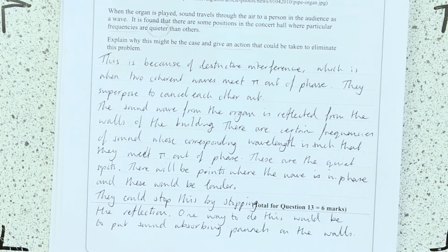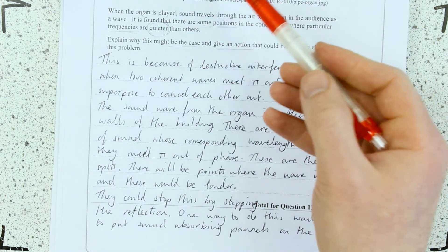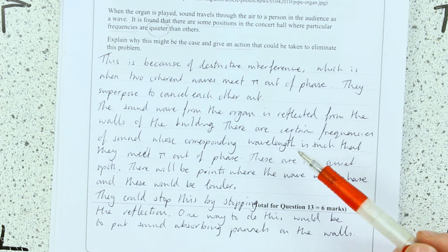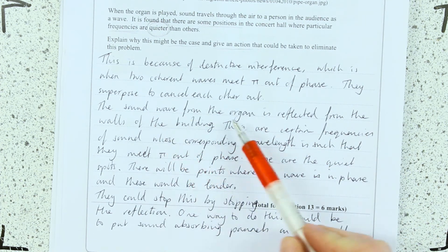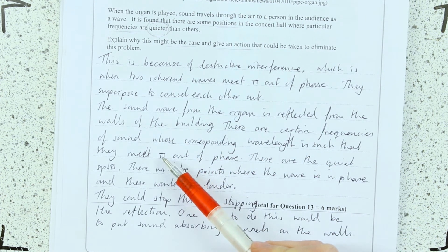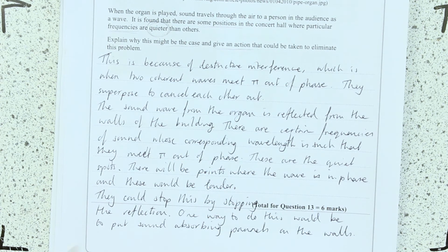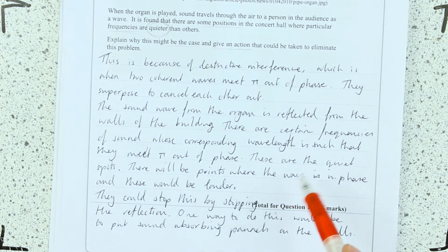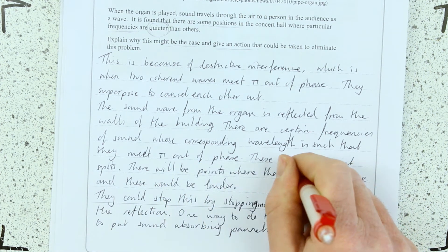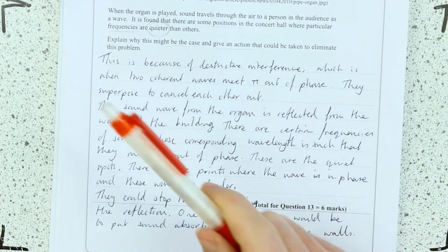You could talk about, well, the sound sets up standing waves in the room. And then you could talk about there being nodes and antinodes. You might want to talk about those being pi out of phase or pi in phase. But importantly, define what a node is and define what an antinode is if you're going to go down that route.